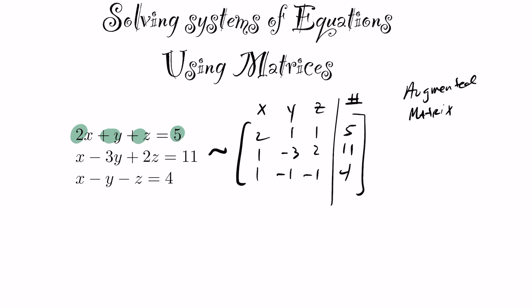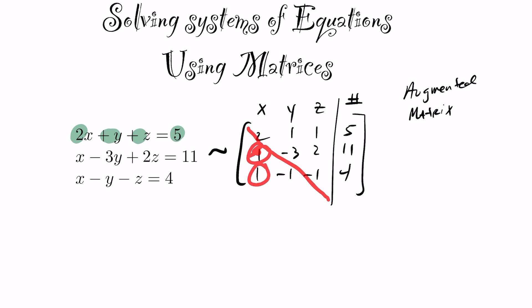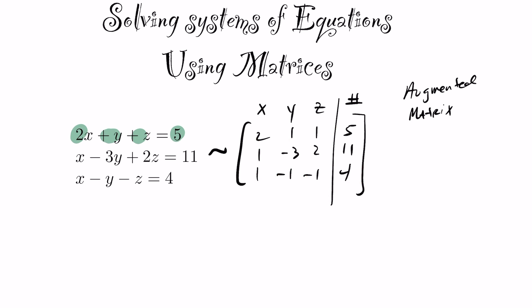Now we perform operations on this matrix to create zeros in three specific locations, making it upper triangular. With those zeros in place, the last row gives an equation to solve for z. We then back-substitute that into the second equation to solve for y, and finally substitute both into the top equation to solve for x. This technique is called back substitution.